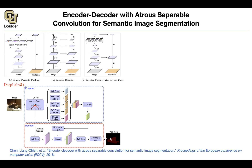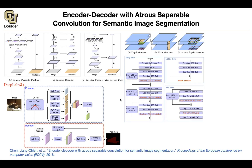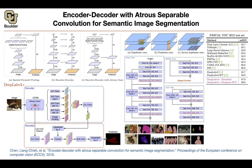You upsample, then do your predictions. They are going to have as their backbone the Xception network, because Xception was an efficient network architecture and we covered it when we were doing image classification. But it's Xception with the pooling layers being replaced by separable convolutions with a stride of two. So rather than pooling, you are going to do convolutions — that's the only change.